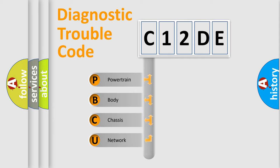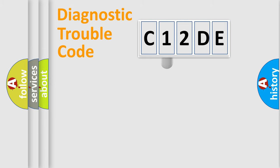We divide the electric system of automobiles into four basic units: Powertrain, Body, Chassis, and Network. This distribution is defined in the first character code.